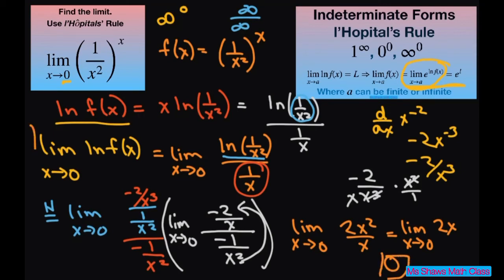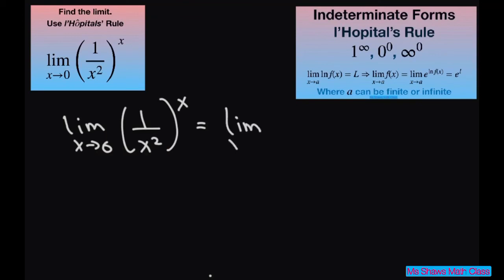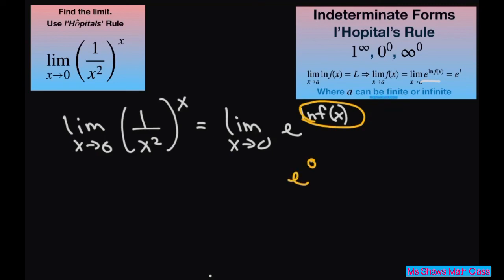So the limit of ln of f of x equals 0. We need to know that for this formula. The limit as x approaches 0 of 1 divided by x squared to the power of x equals e to the power of ln of f of x. Since that was 0, using substitution, e to the 0 power equals 1. So our limit is 1.